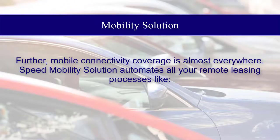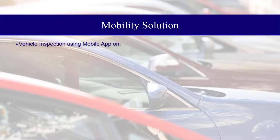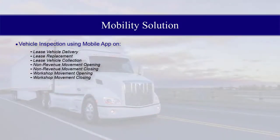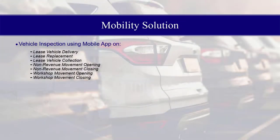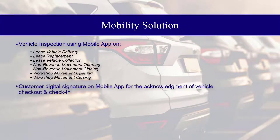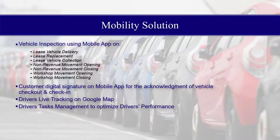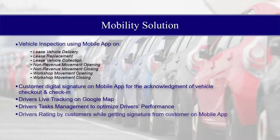Speed Mobility Solution automates all your remote leasing processes, like vehicle inspection using a mobile app, on Lease Vehicle Delivery, Lease Replacement, Lease Vehicle Collection, Non-Revenue Movement Opening and Closing, and Workshop Movement Opening and Closing. It also supports Customer Digital Signature on the mobile app for acknowledgement of vehicle checkout and check-in, Drivers Live tracking on Google Map, Drivers Tasks Management to optimize driver performance, and Drivers Rating by customers while getting a signature on the mobile app.